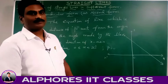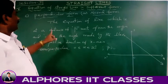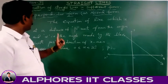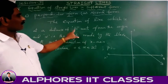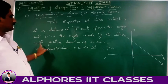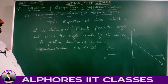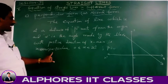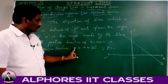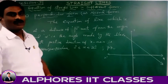Point 6: the perpendicular form or normal form of a straight line. The equation of the line which is at a distance of p units from the origin, where α is the angle made by the perpendicular with the positive direction of the x-axis, is x·cosα + y·sinα = p, where 0 ≤ α < 360° and p ≥ 0.